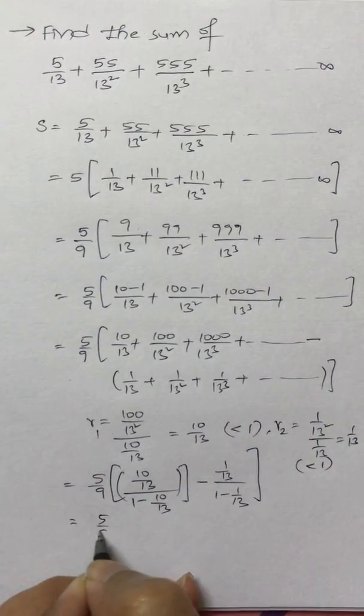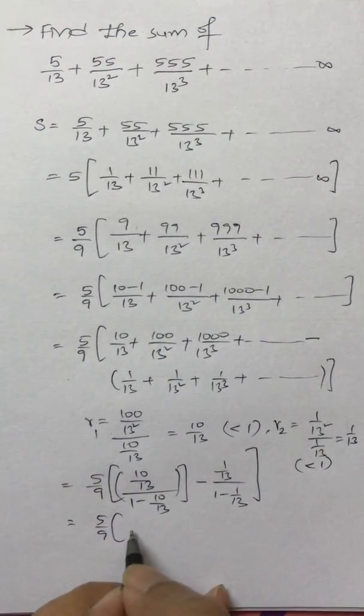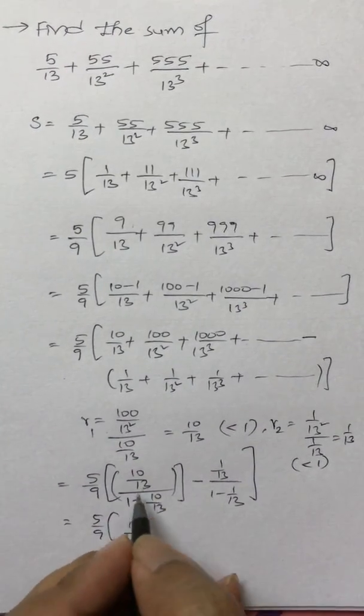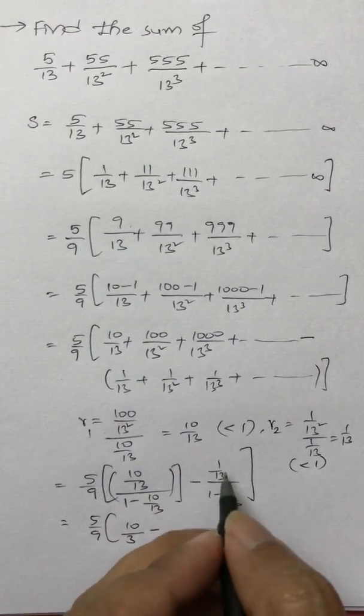So 5/9 into, if you take the LCM and then cancel it, it will be 10/3. So 10/3 minus 1/12.